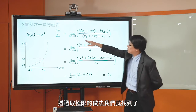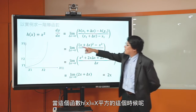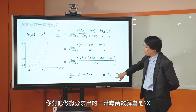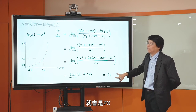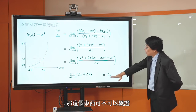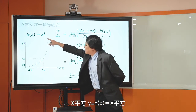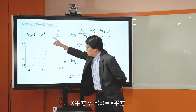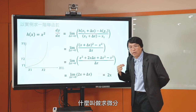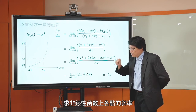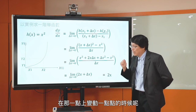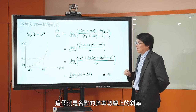2X加DX在DX非常趋近于0的时候会变成什么？就会变成2X。所以我们用微分的想法，透过取极限的做法，找到了当H of X等于X平方的时候，对它求微分dy/dx，求出的一阶导函数就会是2X。这就是求一阶导函数的过程。